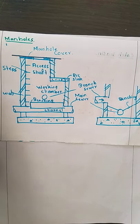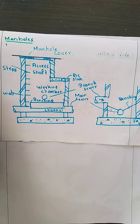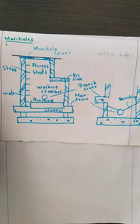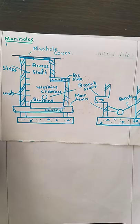In today's class we are going to discuss in detail regarding what are manholes, why they are going to be provided, and how they are going to operate. A manhole is mainly meant for inspection, testing, cleaning, and removal of any obstructions in the sewer line. Wherever there is a need for inspection, testing, cleaning, or maintenance, we are going to provide manholes. The locations of manholes are very, very important.